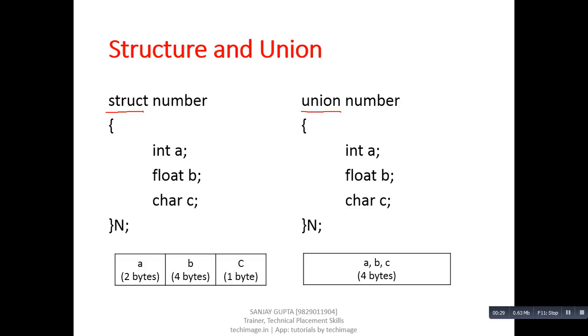So in this example, we have three members in a structure which are A, B, C of integer, float, and character type. In case of union, we also have three members A, B, C of integer, float, and character type. After completion of declaration of structure, we have declared a variable n, and after completion of declaration of union, again n variable is declared.